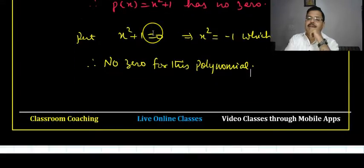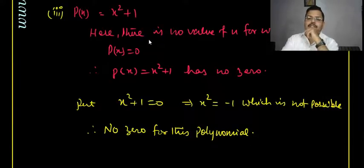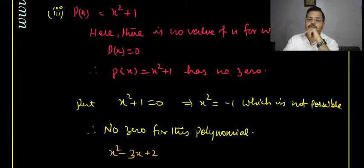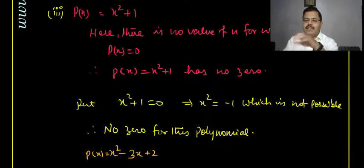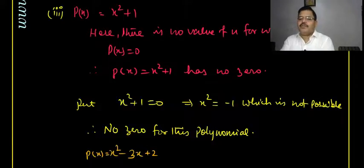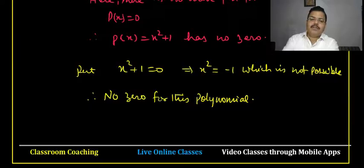Sometimes there may be no zero of a polynomial, or the number of zeros may be less than the degree. For example, given p(x) = x² − 3x + 2, if someone asks whether x = 1 is a zero: put x = 1 — if the result is zero then x = 1 is a zero; if not, it is not a zero.